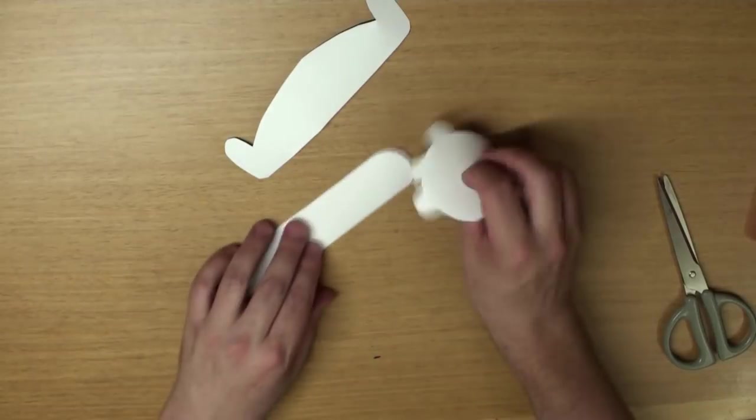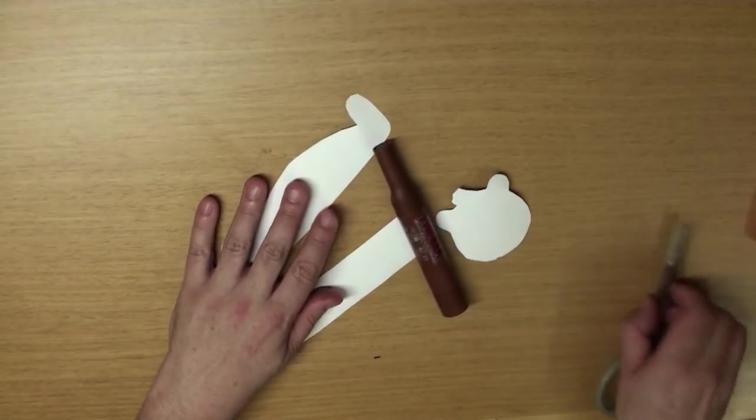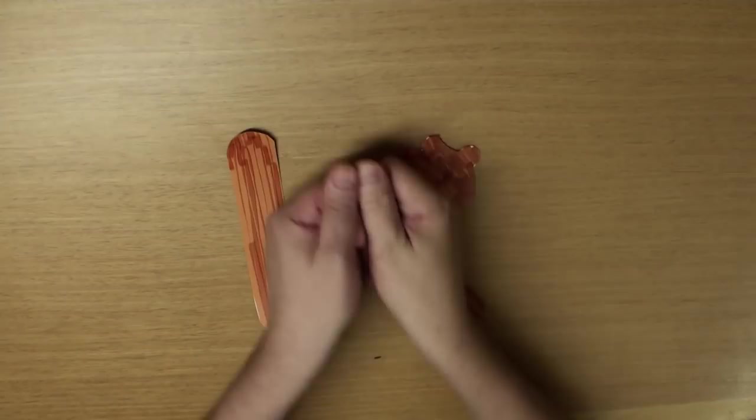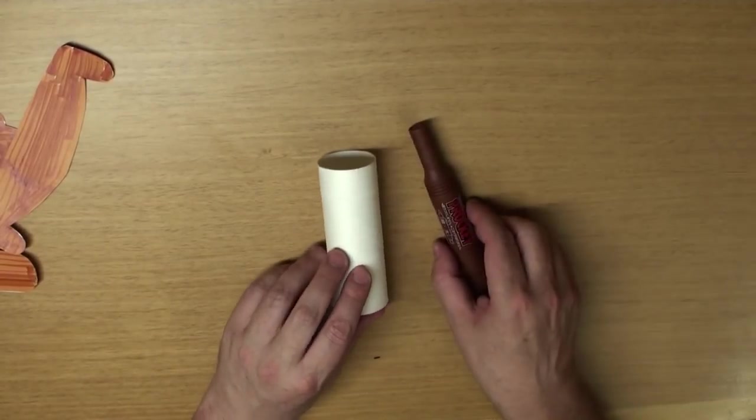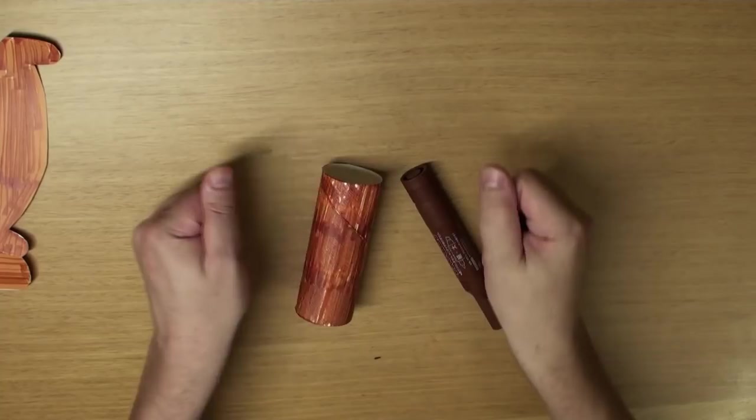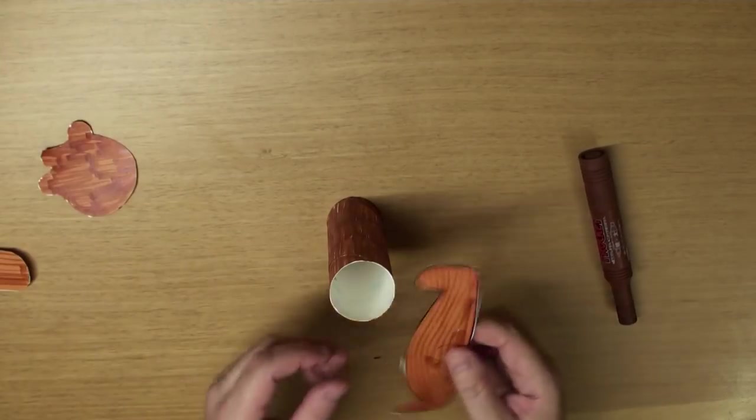Now turn them over and we're going to color the backs brown too. Great! And grab your tube. And we also need to color that one brown too. Well, now we're ready to put them together.